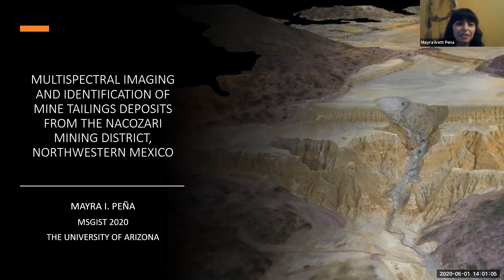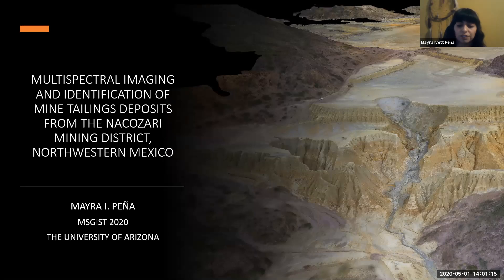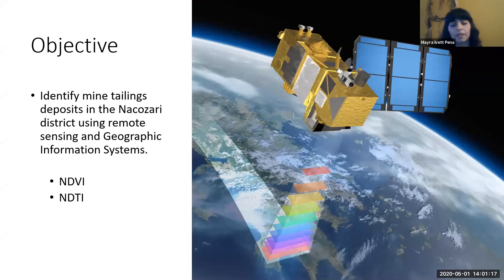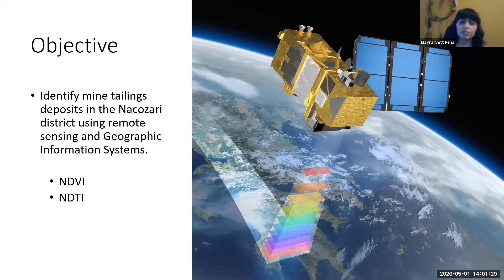Good afternoon, everyone. My name is Mayra Peña, and I'm going to be presenting the Multispectral Imaging and Identification of Mine Tailings Deposits from the Nacozari Mining District, northwestern Mexico. The aim of this project was to apply the use of remote sensing data and GIS to identify mine tailings deposits in the Nacozari District by using normalized difference vegetation index and normalized difference tailings index approaches.